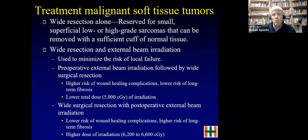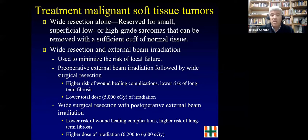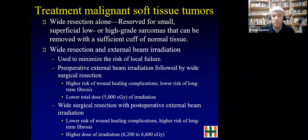For malignant soft tissue tumors, wide resection alone is used for small, very superficial high-grade sarcomas where you can ensure normal tissue margins, or low-grade tumors. Wide resection with external beam radiation is mainly to minimize the risk of local failure — it does not improve survival, only reduces local recurrence. Radiation can be given pre-operatively or post-operatively: pre-operative radiation causes more wound healing problems but lower long-term fibrosis with lower doses; post-operative radiation has lower wound healing complications but more fibrosis and requires higher doses.